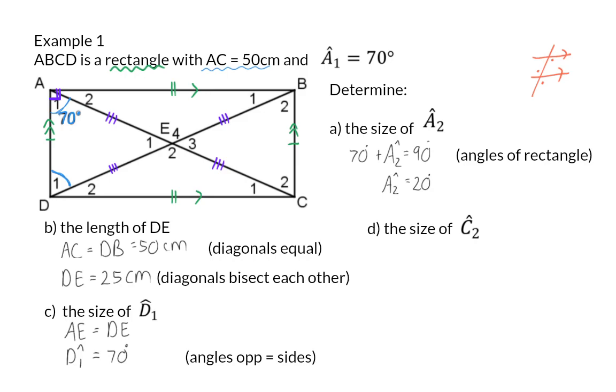Next up, we need to determine the size of angle C2. For this, you need to remember that the pairs of opposite sides are parallel, and therefore we can make use of alternate angles to say that angle C2 is the same size as angle A1. So, we started off saying that AD is parallel to BC,